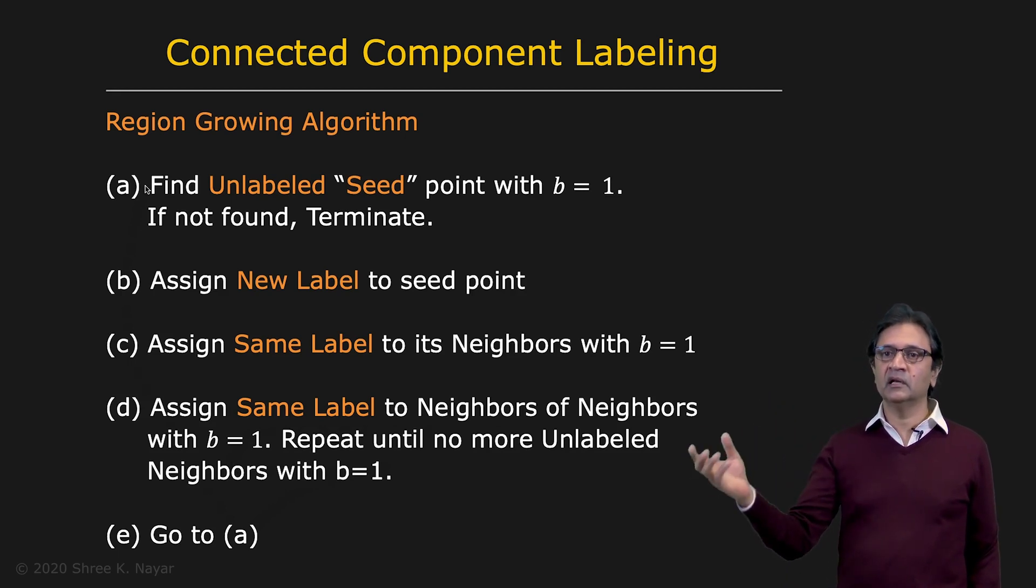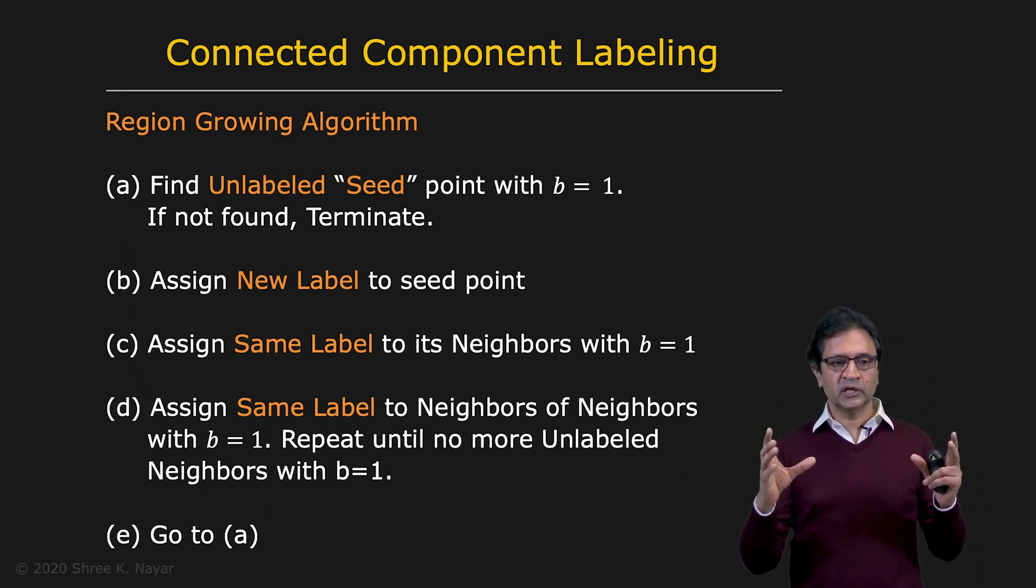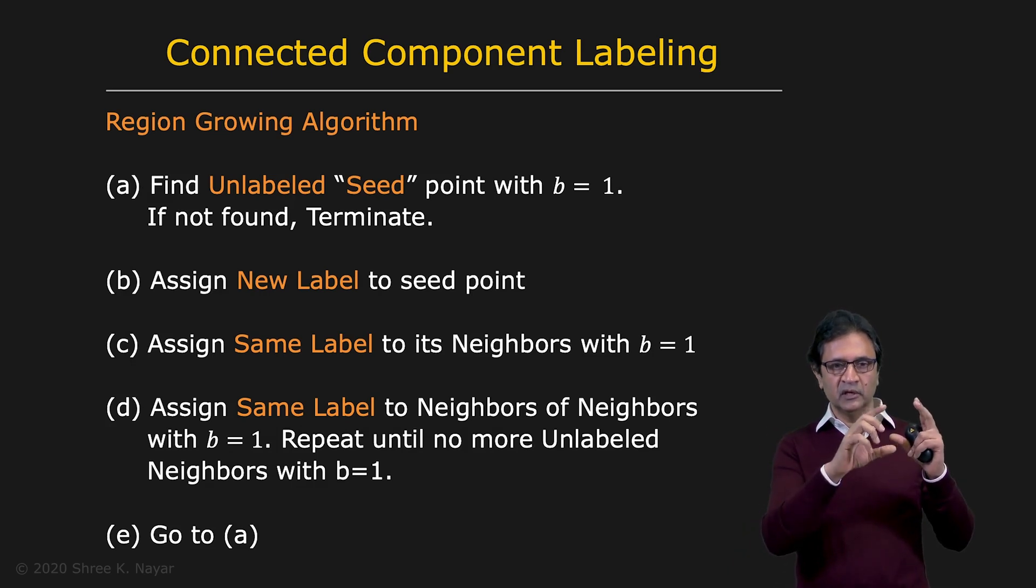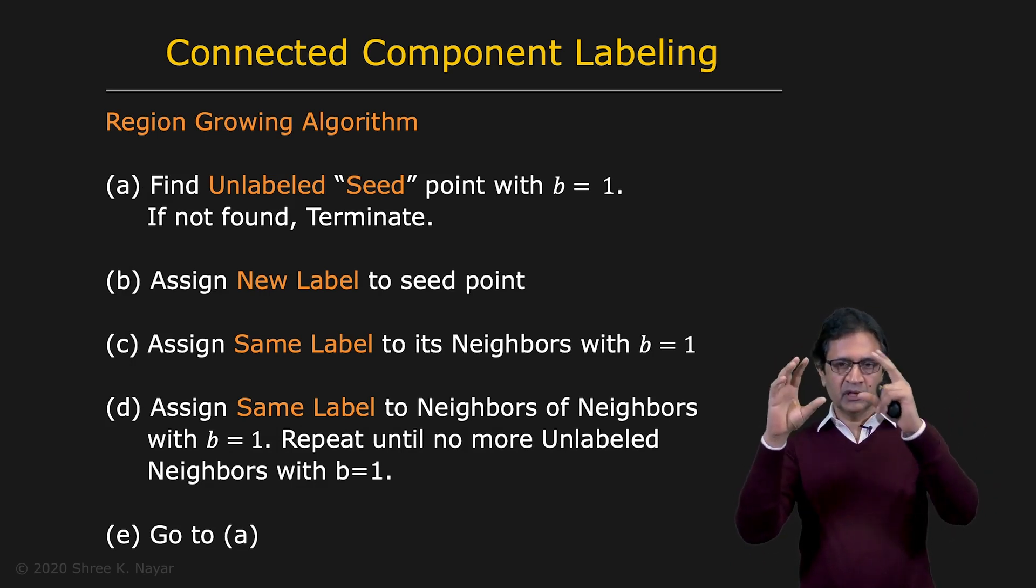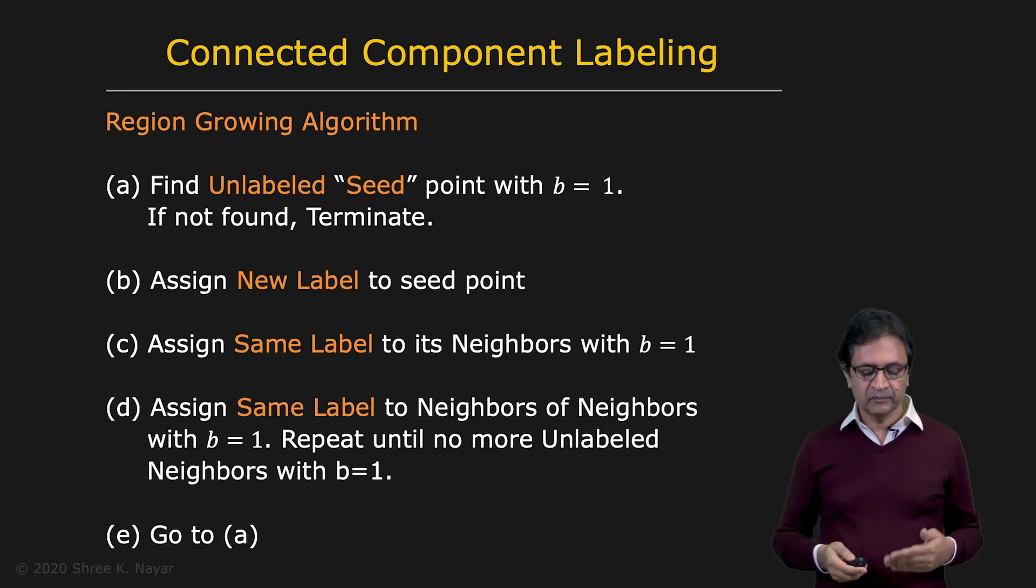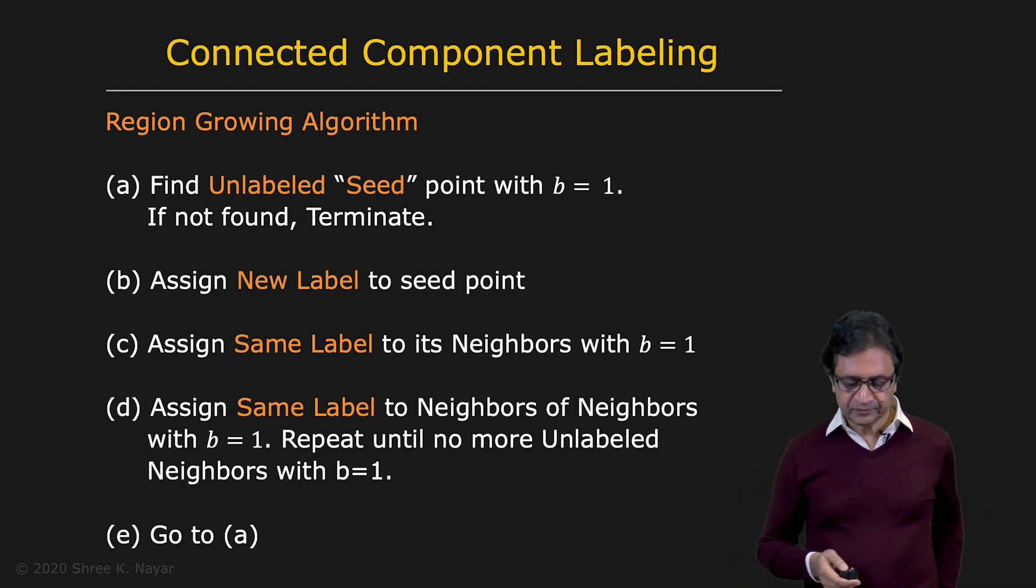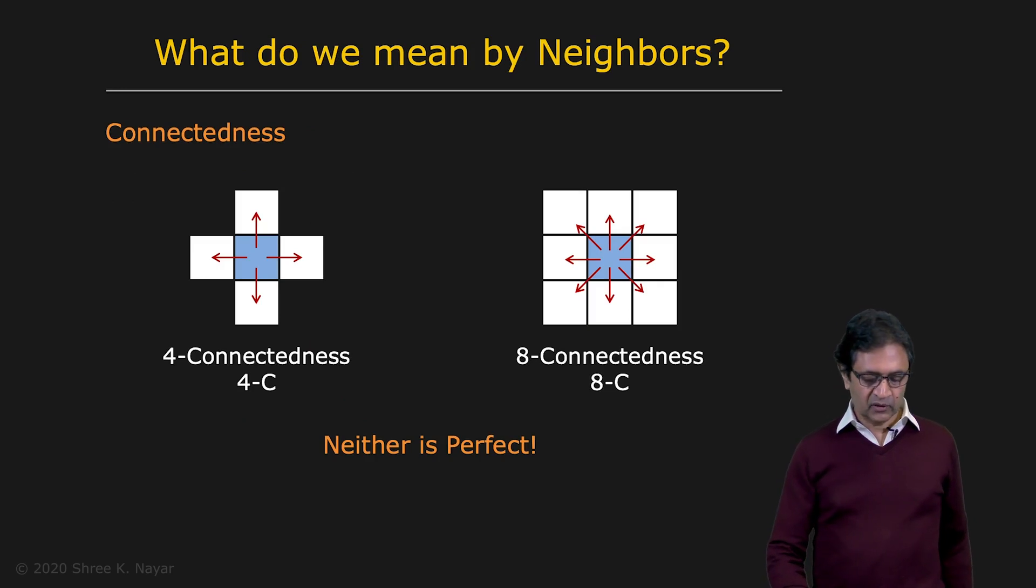When you get to that point, you simply go back to A, look for the next unlabeled seed point with B equal to 1. So when you do this, what's going to happen is you're going to hit your first region, first objects. You grow that one. And then you're going to hit the next one. And you grow that one. And so on. It works fine. But you can actually do much better than this. But before we get there, let's talk about what we mean by a neighbor.